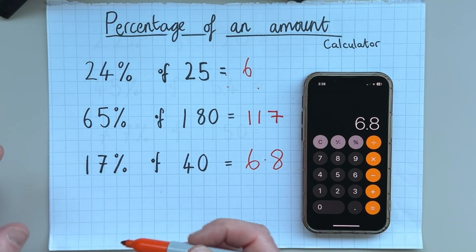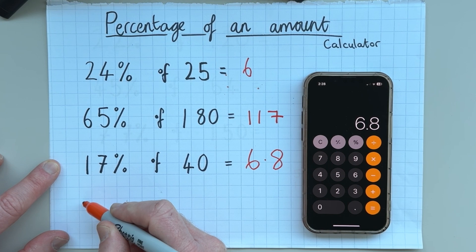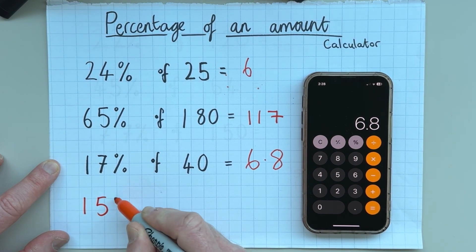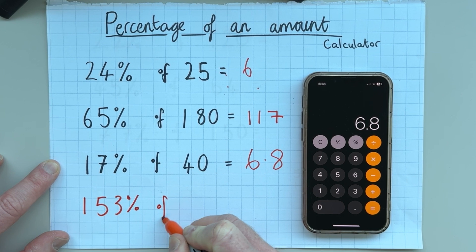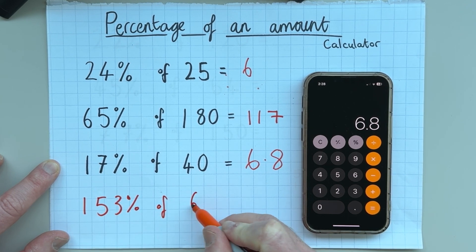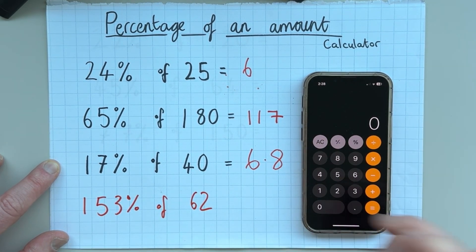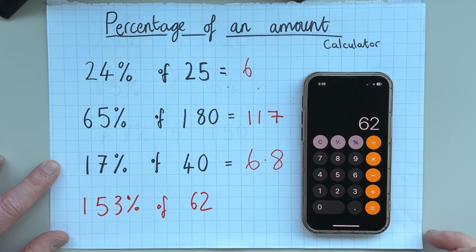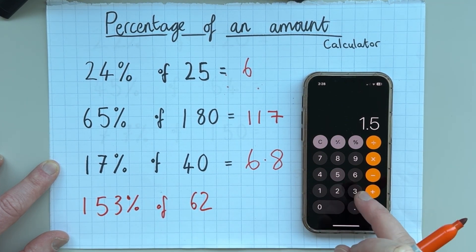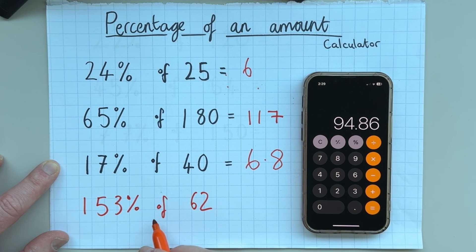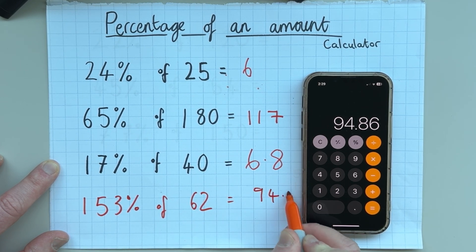And this also works if you're trying to find like 153% of a number. So let's say 153% of 62. So this time what I'd do is I'd take 62 and I'd multiply it by 1.53 and that would give me the same as 153%. So 94.86.